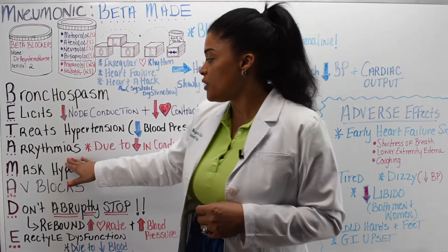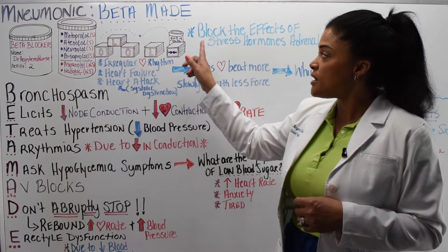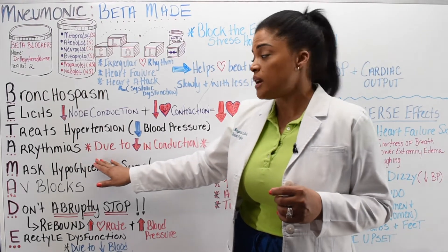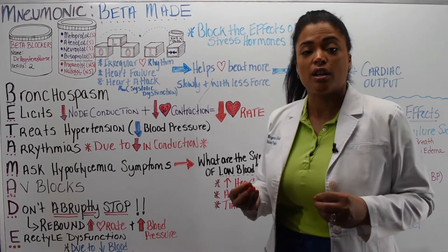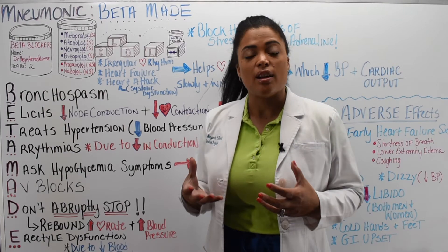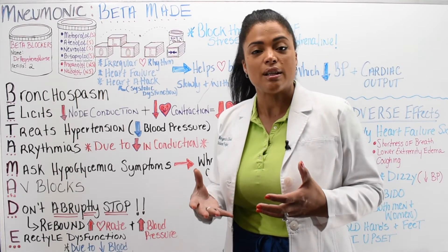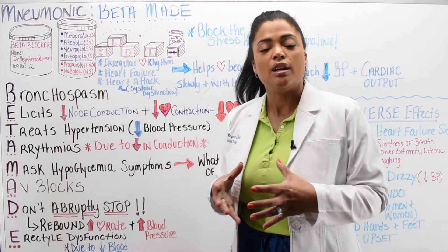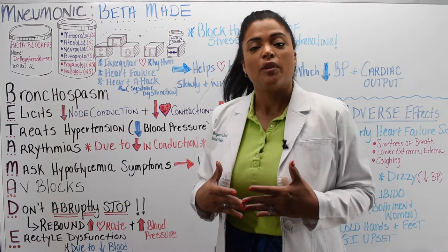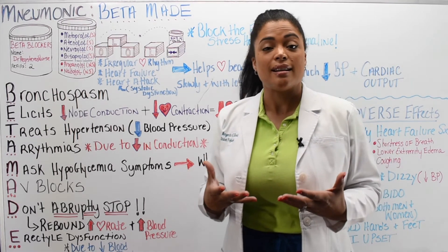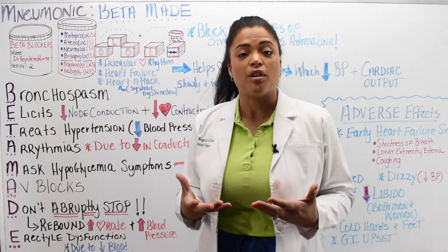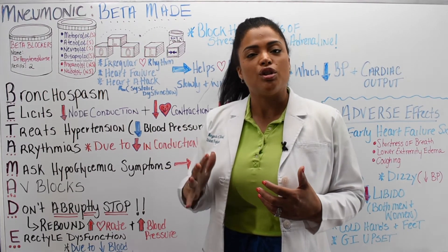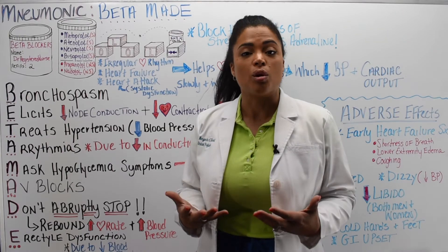A is for arrhythmias. Beta blockers are given for arrhythmias because they decrease conduction. Conduction is the energy, so if conduction is decreased, the heart works less forcefully and the heart rate drops. If someone has sinus tachycardia or some type of arrhythmia and is given a beta blocker, it will reduce that heart rate to a more normal rhythm.